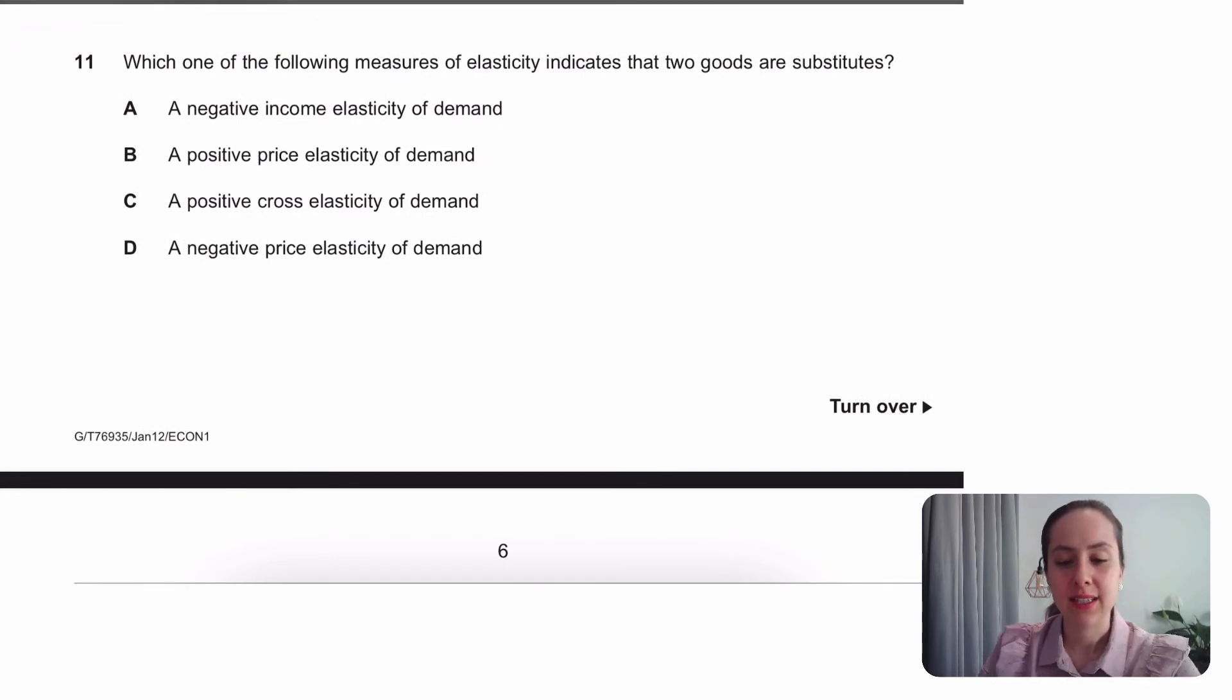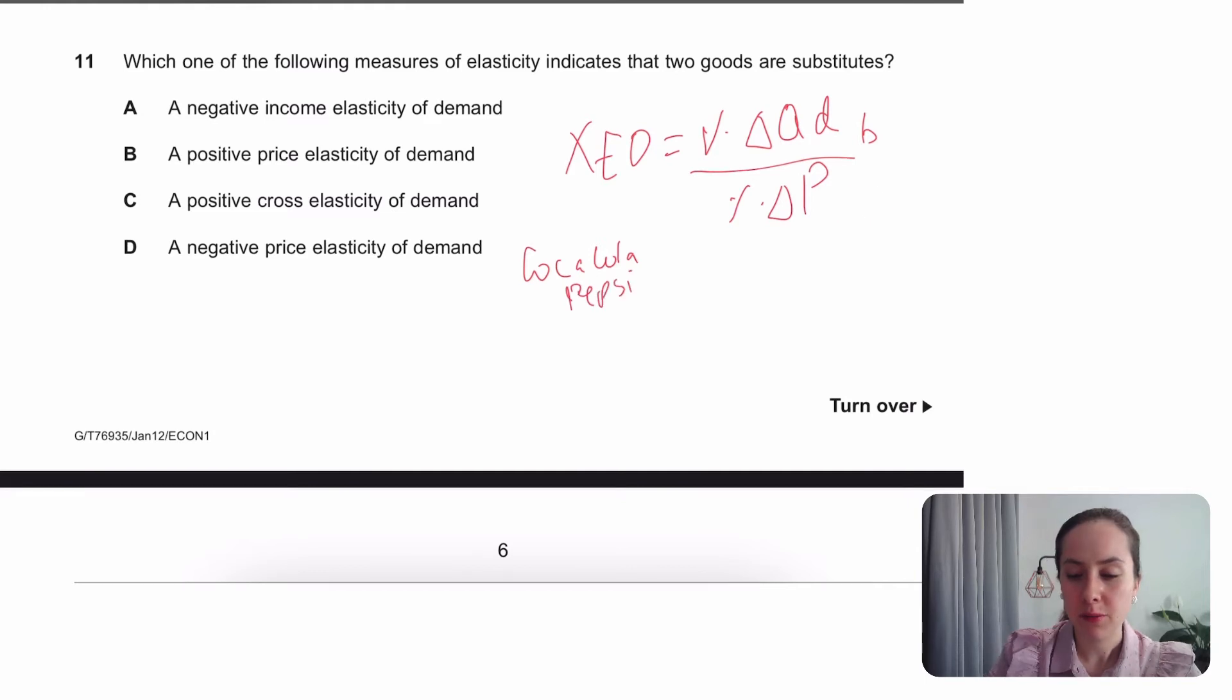Which of the following measures of elasticity indicates two goods are substitutes? Substitutes, complements, you want to use XED. XED percentage change in quantity demanded divided by percentage change in the price. And this got to be of two different goods. So it doesn't matter which good. I'll use A and B in this example. Think of examples. That's the way that I do this. An example is Coca-Cola and maybe Pepsi-Cola. So if Pepsi-Cola increases in price, this is being a positive. If Pepsi increases in price, Coca-Cola is having a good day. They're selling a lot more than usual because customers are switching towards them away from Pepsi. So these should be positive. So we're looking for a positive cross elasticity.